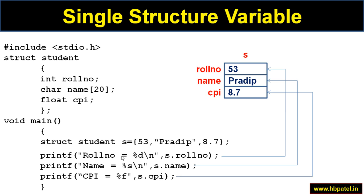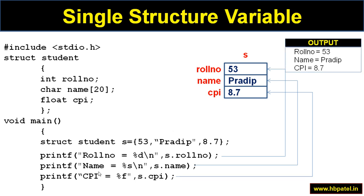Using printf, s.roll_number prints 'roll number = 53', s.name prints 'name = Pradeep', and s.cpi prints 'CPI = 8.7'. This is how you can use a single structure variable in a program.